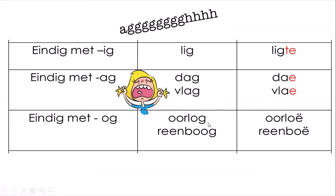As iets eindig met OCH - so it's 'oorlog' or 'reënboog' - we also take the G away and put an E, but now that E wants a deelteken - the dots on top of the E. We do that for pronunciation, because the way we say the word changes. Without the dots, 'oorlog' would be mispronounced - 'oerloe' - because OE is a sound. But with the deelteken it is 'oorloë'. Reënboog word reënboë.